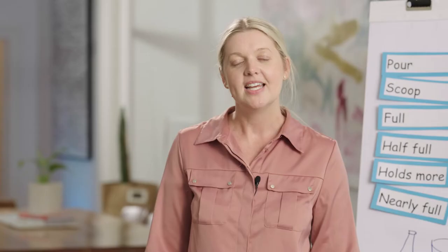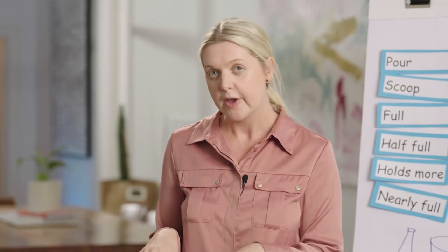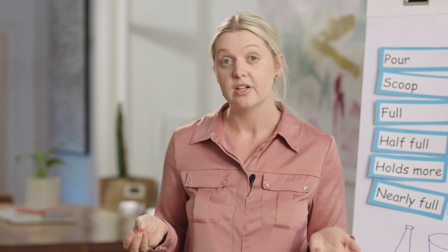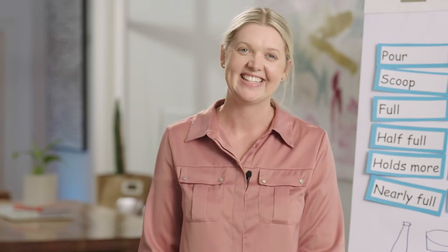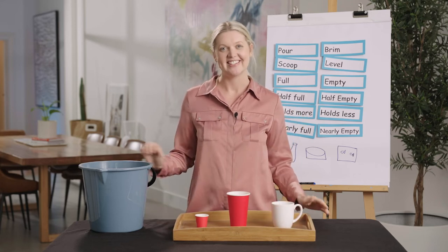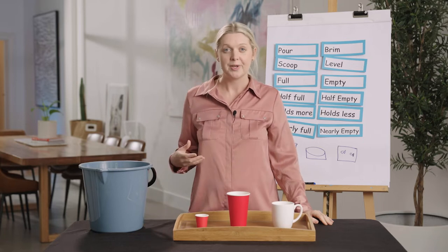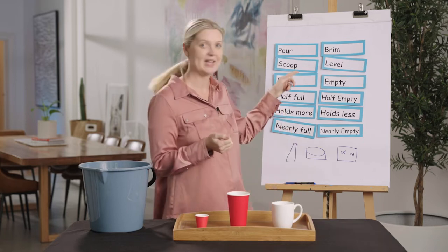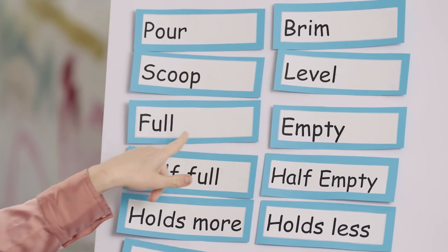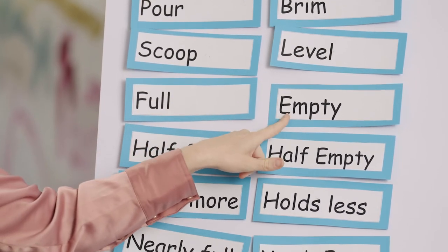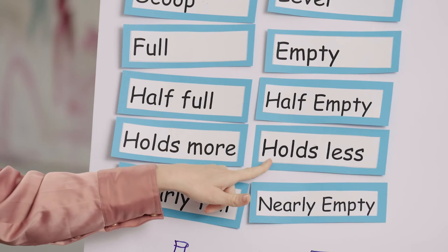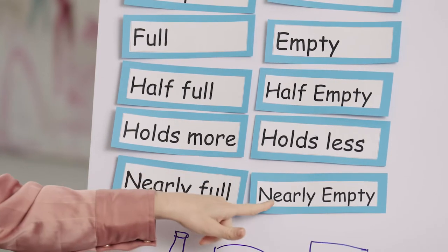Great job. Now, before we use our formal measuring tools, we first need to know how to use the informal measuring tools. Today we're going to learn how to use informal tools accurately. We are going to measure the capacity of this mug using sand. Let's remember the words that will be very helpful when we are measuring: pour, brim, scoop, level, full, empty, half full, half empty, holds more, holds less, nearly full, and nearly empty.